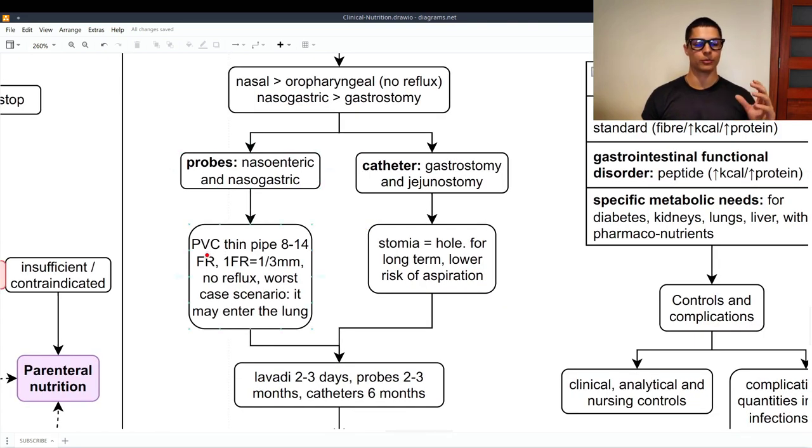The probes are made with PVC and they are a thin pipe, about 8 to 14 French. One French is a third of a millimeter. So as you can see they are very thin. They create no reflux and the worst case scenario of it is that it may enter the lung when we are trying to apply the probe. On the other hand, we said that stomia means hole and the catheters are meant for a long term and there is a lower risk of aspiration indeed because we are going to create a hole and not using the mouth or the nose.